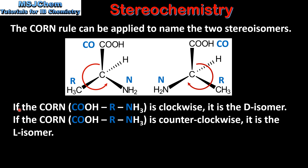If the CORN is spelt clockwise it is the D isomer. If the CORN is spelt counterclockwise it is the L isomer.